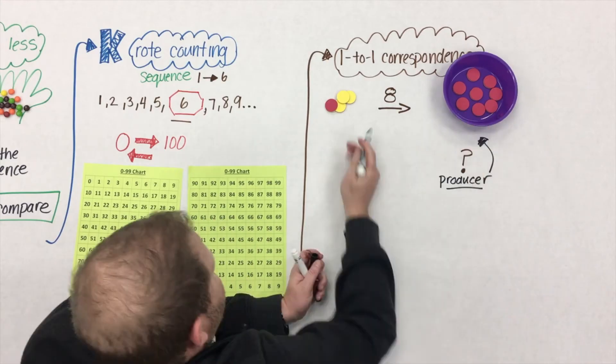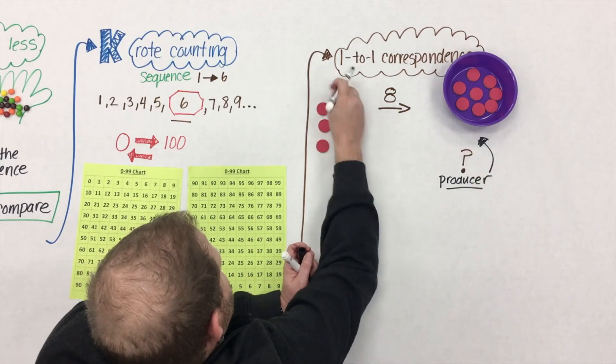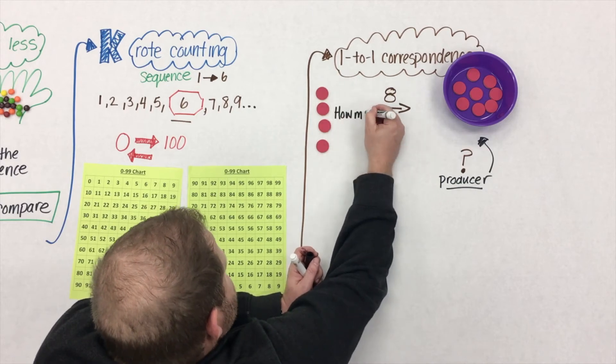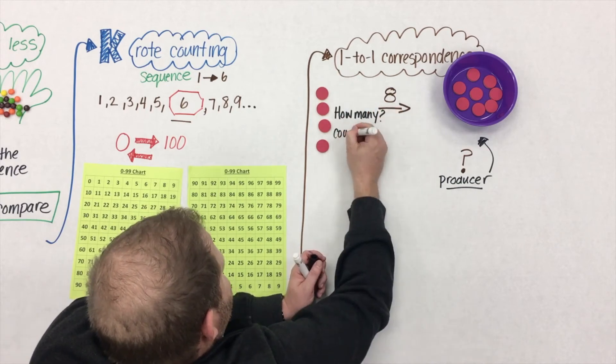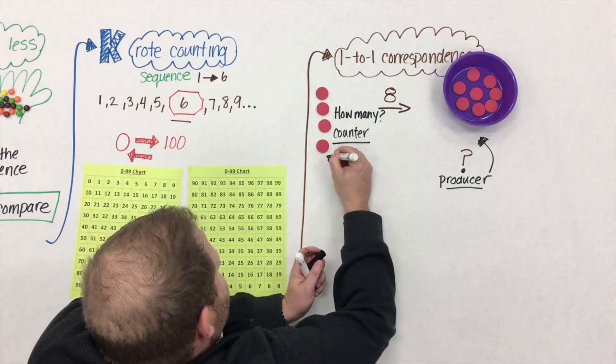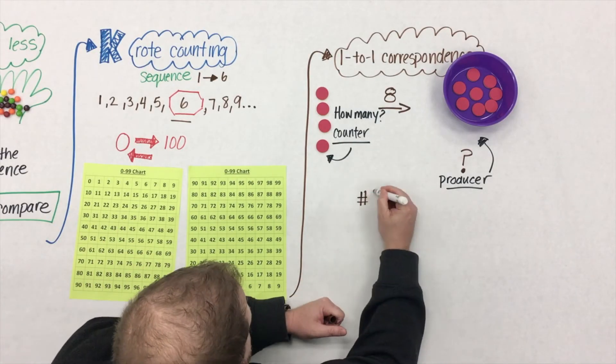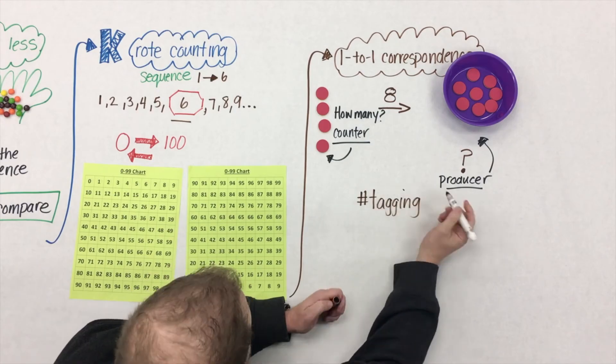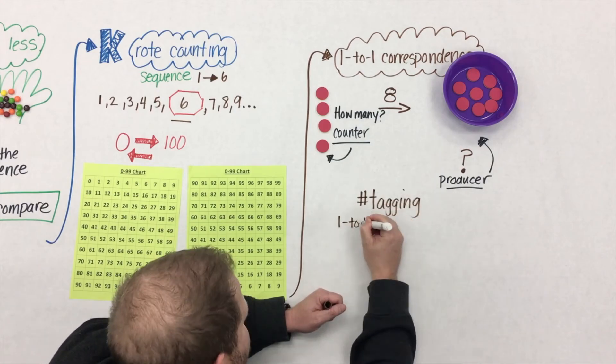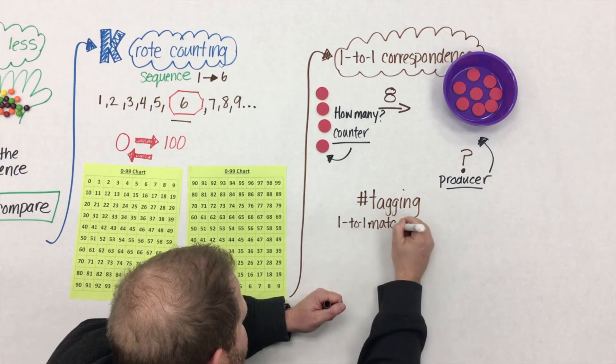Now if you ask them how many were in the bowl, they don't know. They'd have to go back and recount them all over. A student that we'd ask how many didn't make it inside the bowl, they're a counter. They can count a finite set of a quantity. For instance, there was 4 that couldn't make it. We want to make sure that students are both counters and producers.